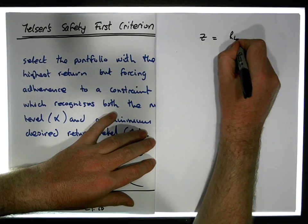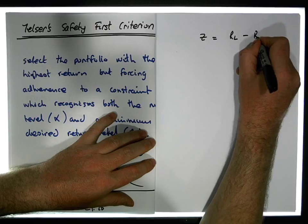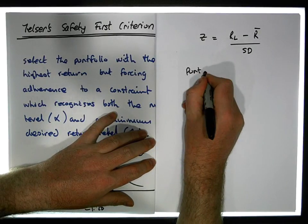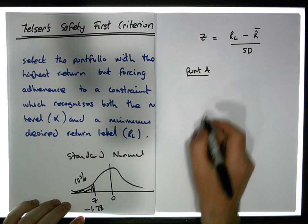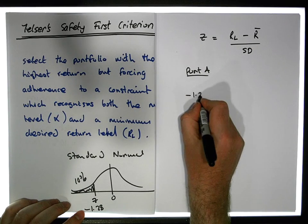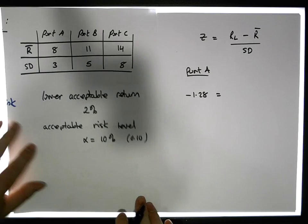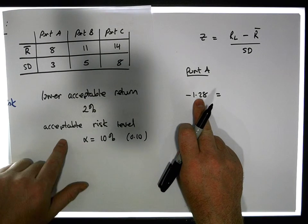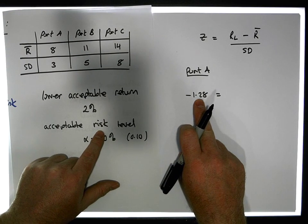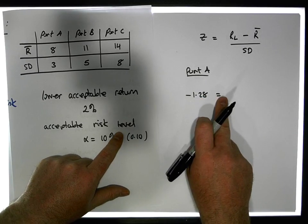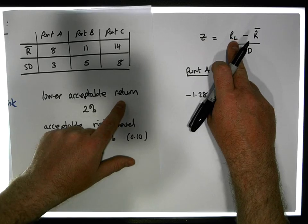For portfolio A, z is minus 1.28, so minus 1.28 must be equal to RL, the minimum return level that we're willing to accept. Minus 1.28 is the z-score based off the acceptable risk level of 10%, and this has to be equal to RL which is the minimum return level.